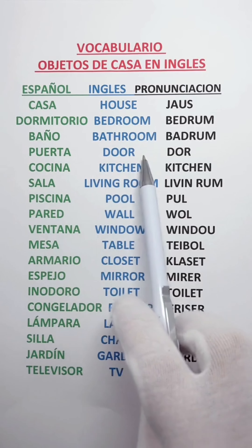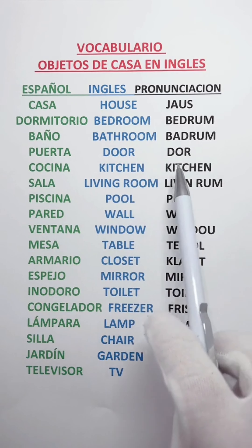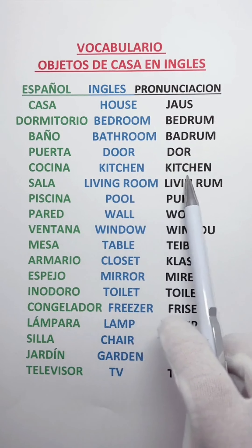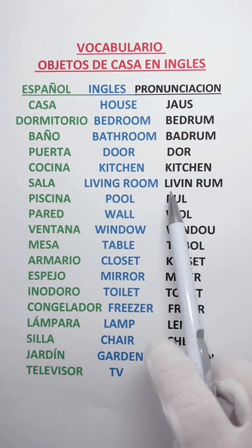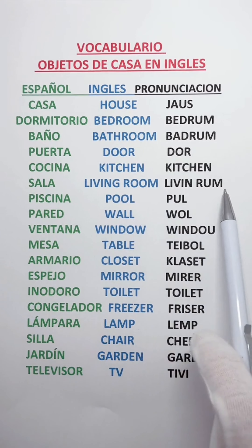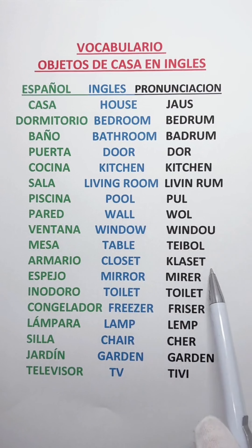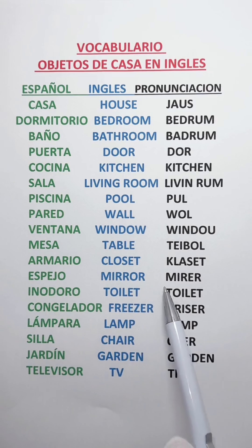Puerta — Door. Cocina — Kitchen. Sala — Living room. Piscina — Pool. Pared — Wall. Ventana — Window. Mesa — Table. Armario — Closet. Espejo — Mirror.